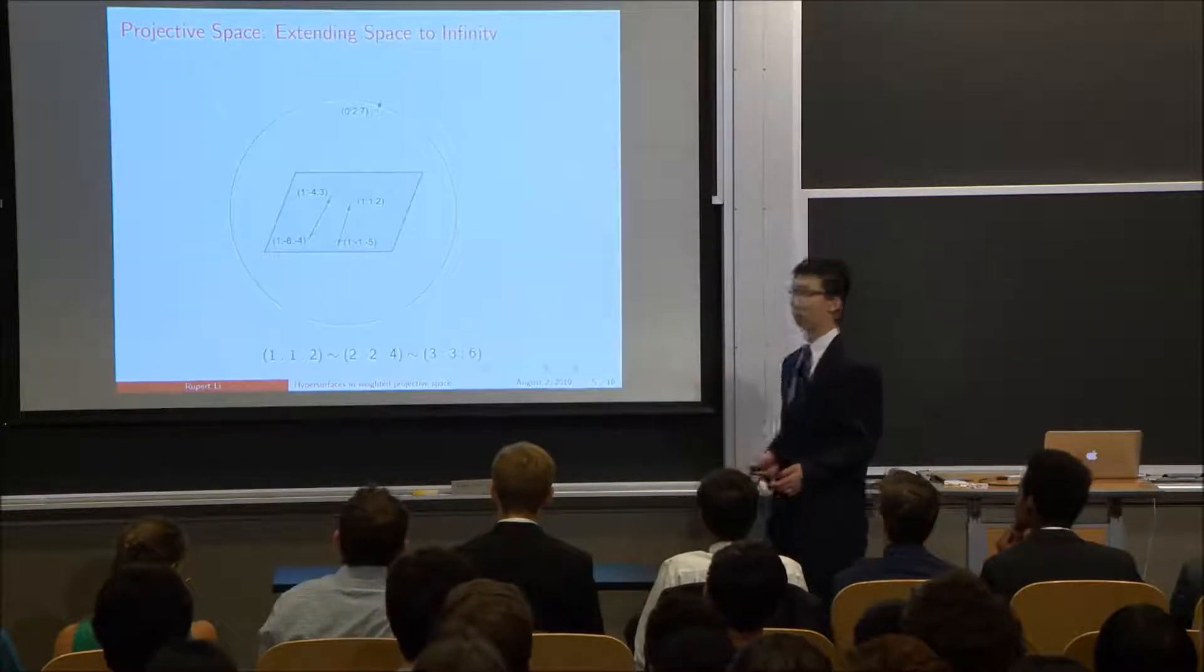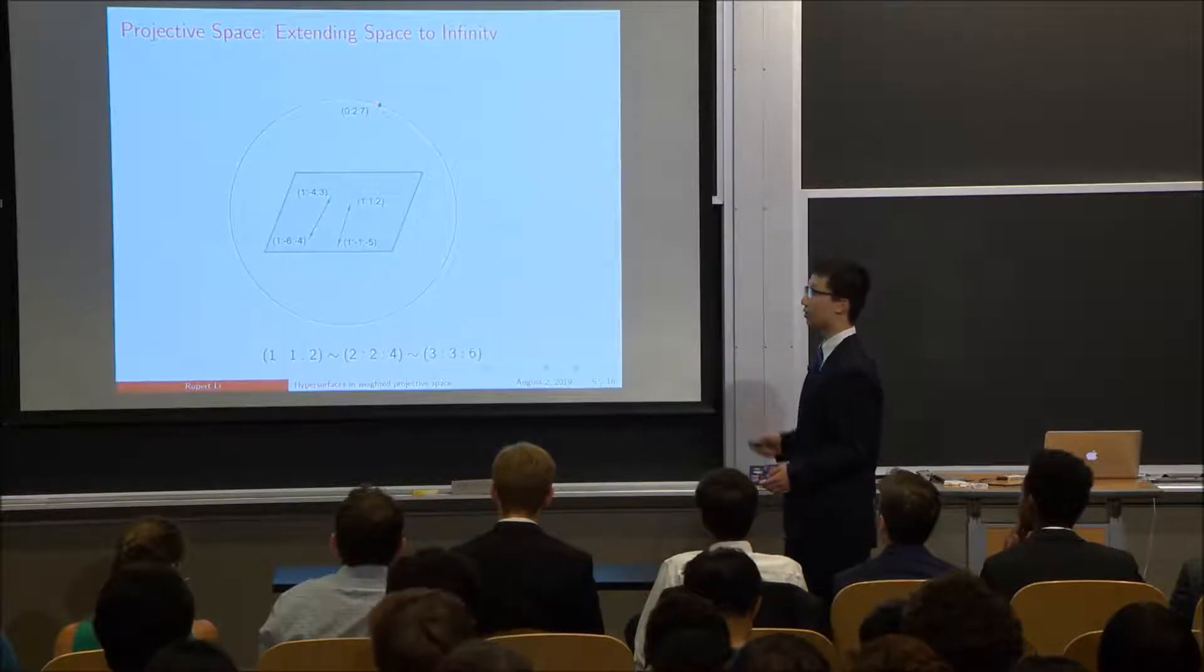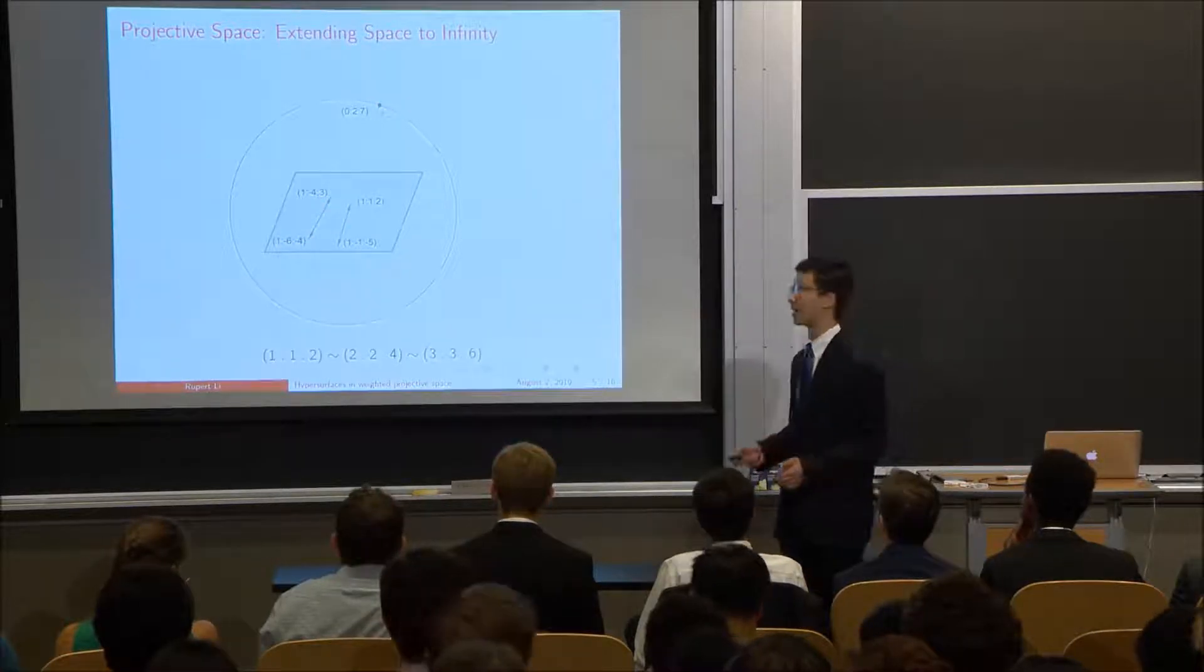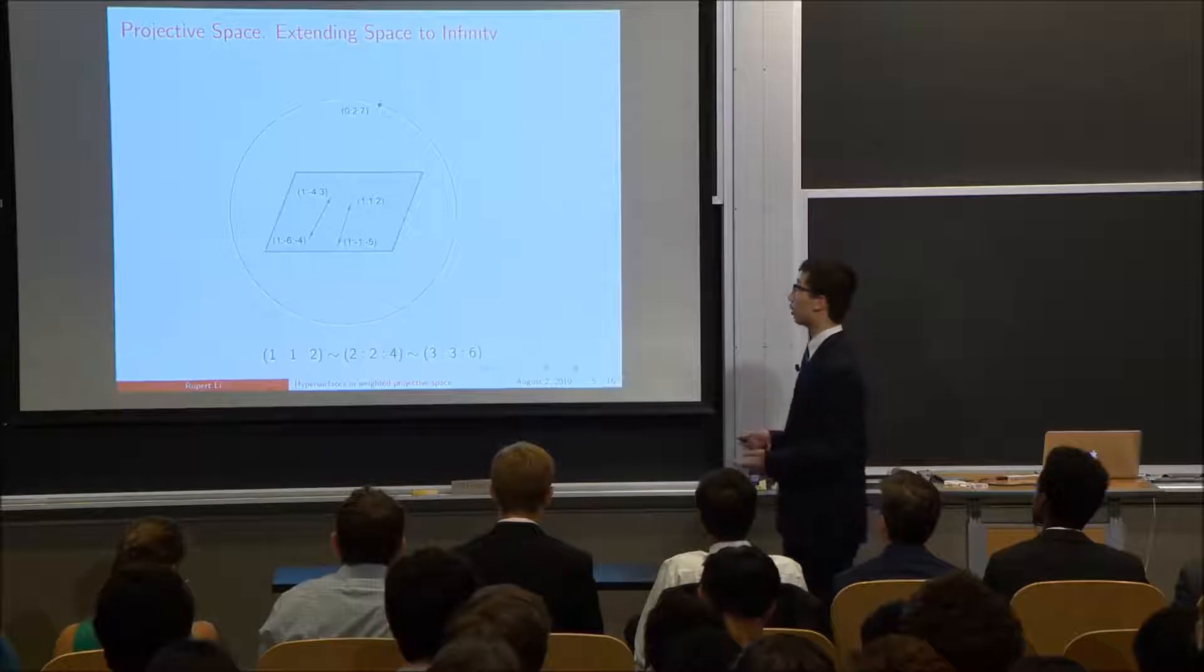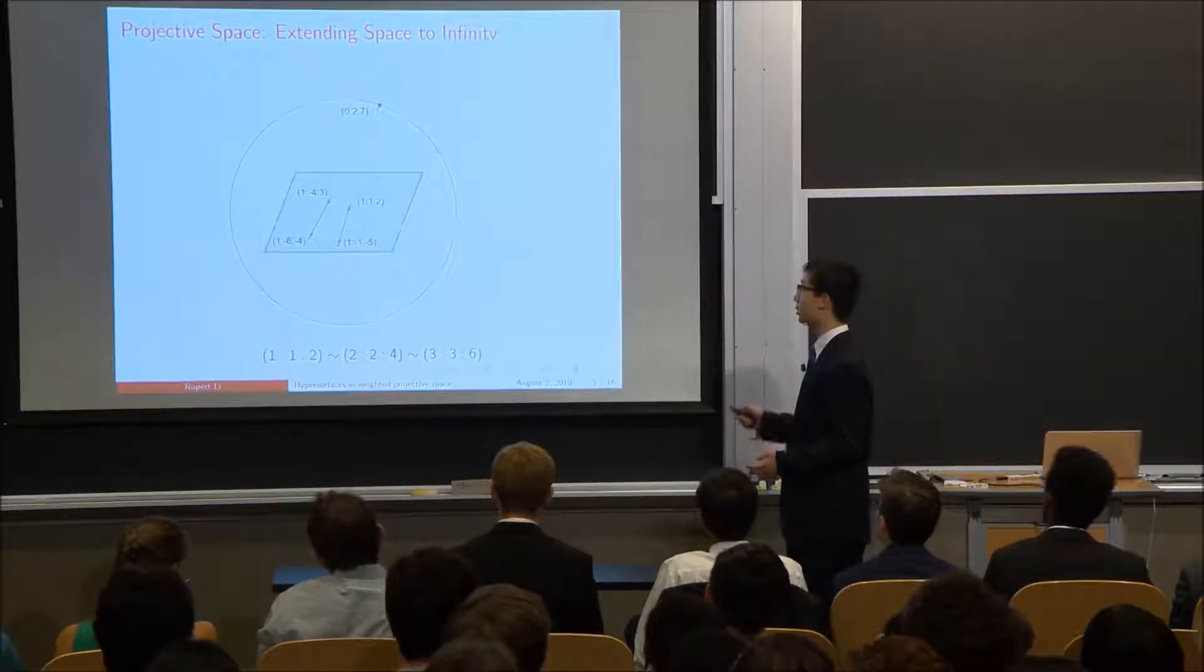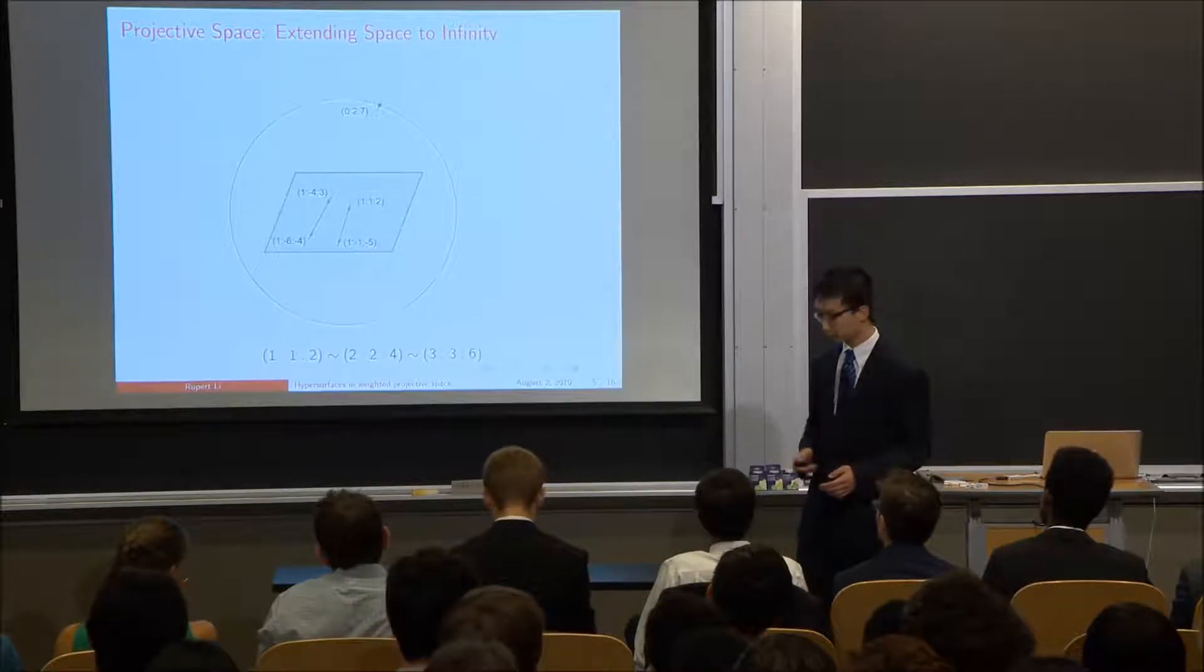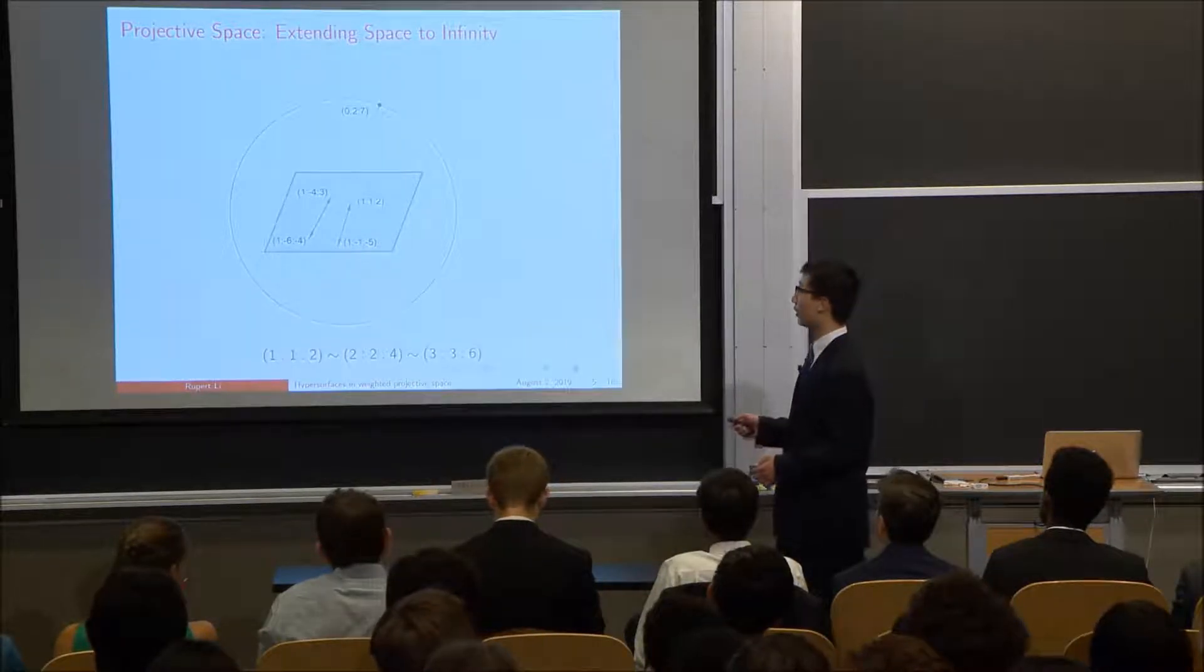So what does projective space as a whole look like? If we have those two parallel lines from before, they intersect at that point at infinity. But we have to include a circle at infinity for all possible directions of those parallel lines. So projective space looks like this plane and then extending it into the circle at infinity. And we like to think of points through coordinates. So I've labeled all the coordinates here.